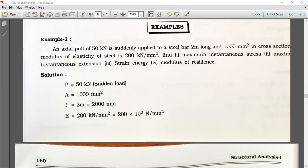Let's list the data: P load equals 50 kilonewton, area equals 1000 mm square, L equals 2 meters which is 2000 mm, E equals 200 kilonewton per mm square converted into 200 times 10 raised to 3 newton per mm square.